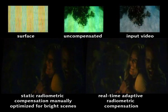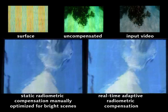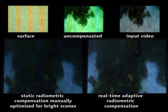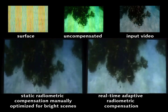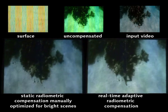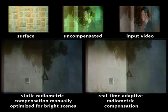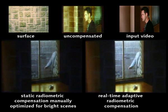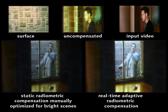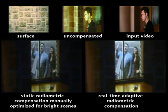In this example, the content is projected onto striped wallpaper. These video scenes are projected with radiometric compensation onto a natural stone wall.